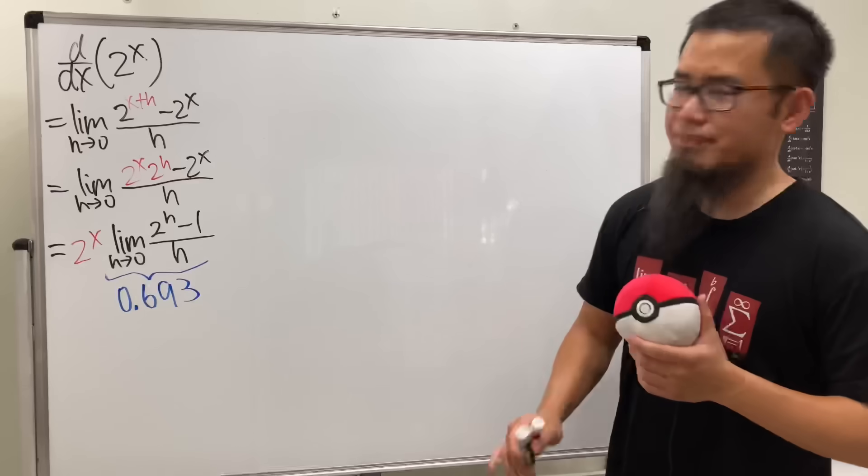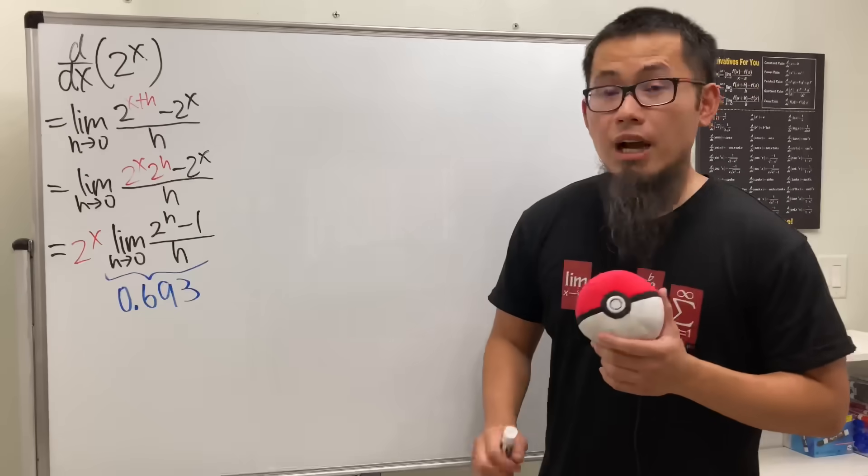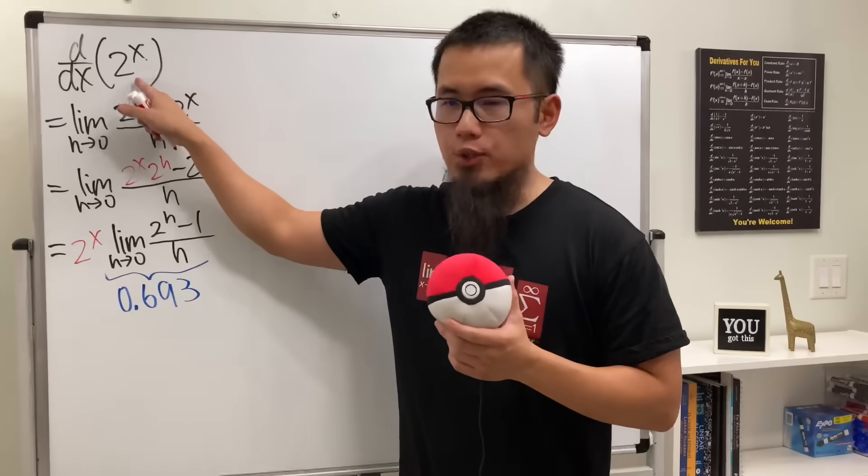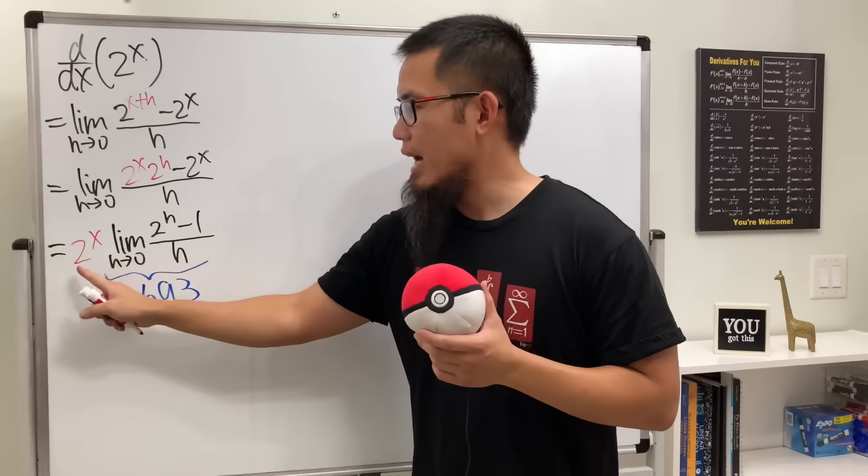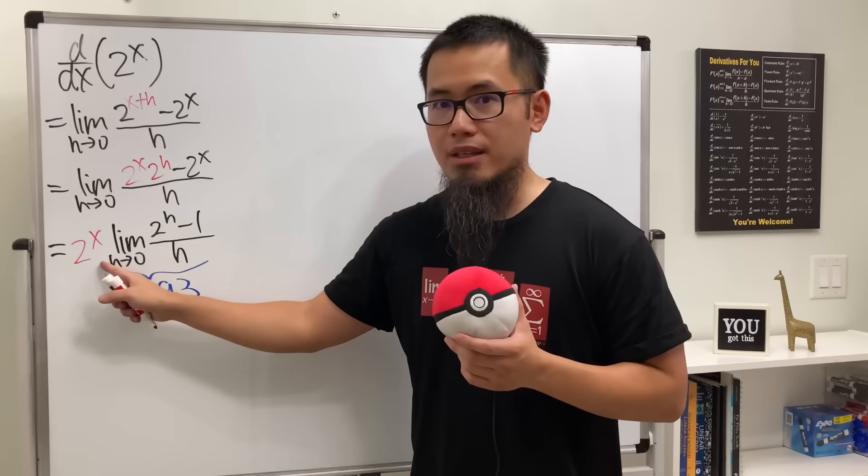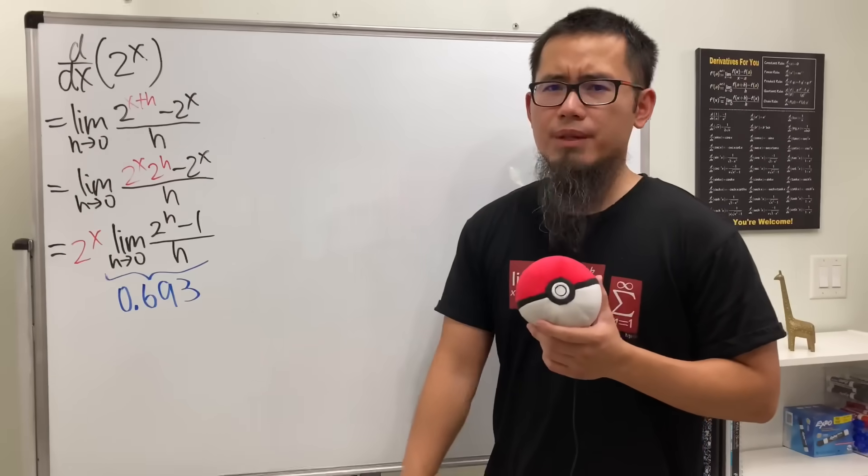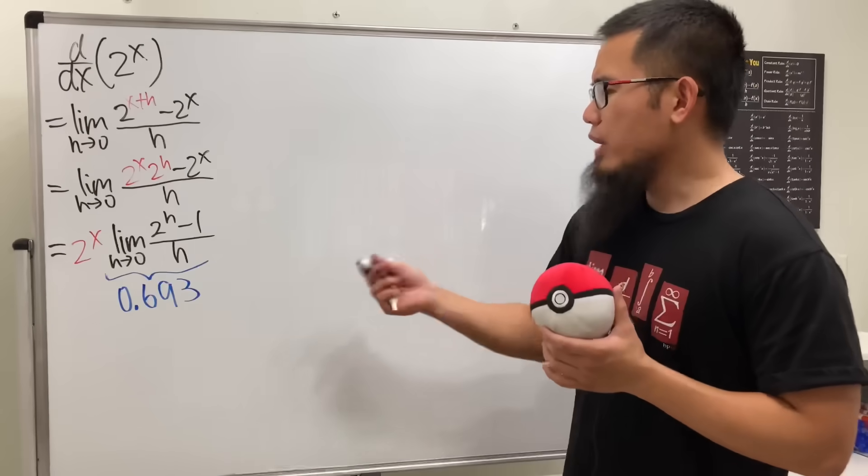And some of you guys might recognize this number, but let's not talk about that yet. But I do want to tell you this though. Have a look. When we differentiate 2 to the x, we see that we have 2 to the x right here again. But unfortunately, we have to multiply by this weird number. So this is not so clean, right?